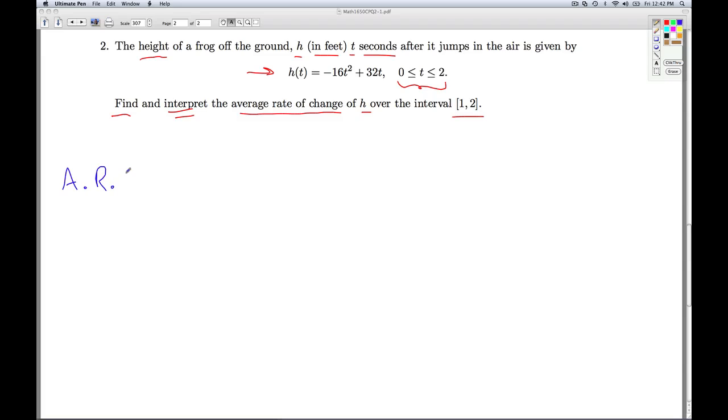So, the average rate of change of a function, remember, is a slope. It's the slope of the secant line. We're looking at the change in the outputs, so the change in the function h, divided by the change in the inputs, and here the change in time. So I look at the h value at the end of the interval and look at the difference between that and the h value at the beginning of the interval, divided by the length of the interval.